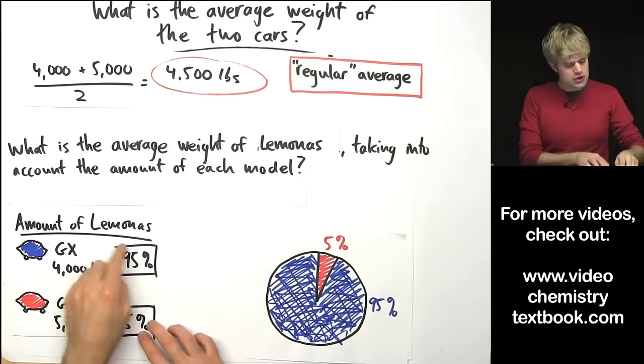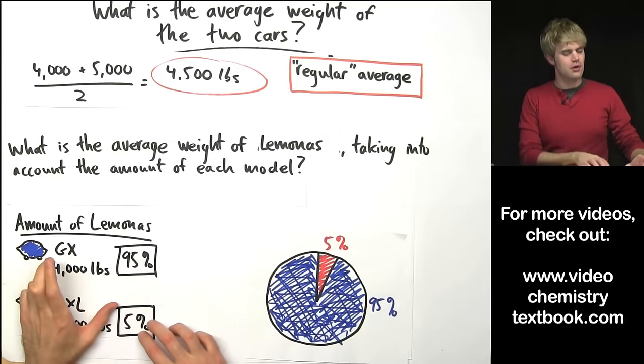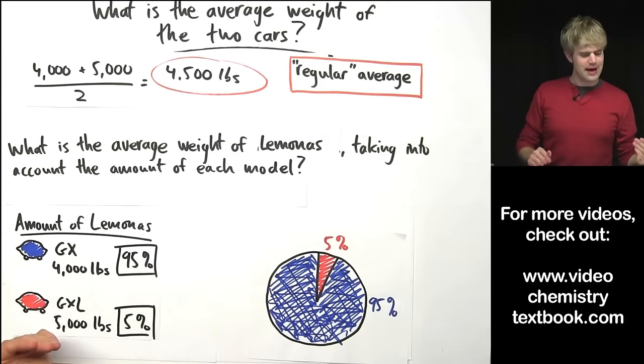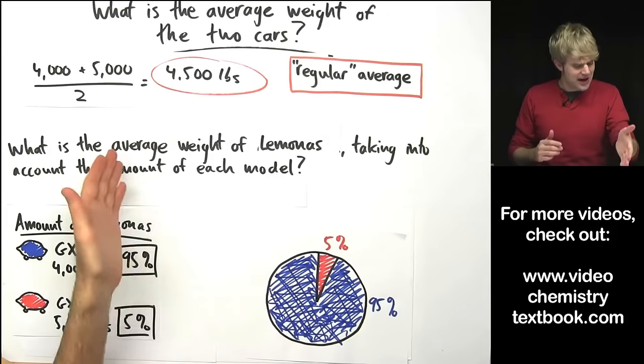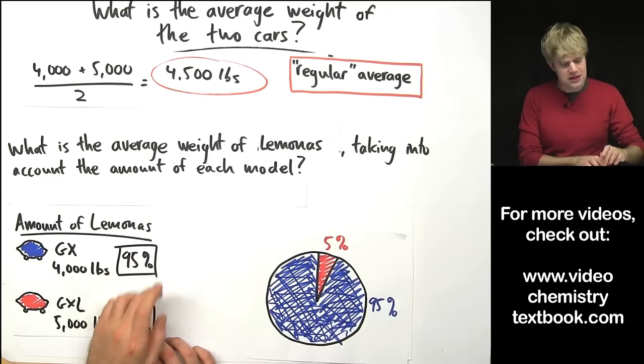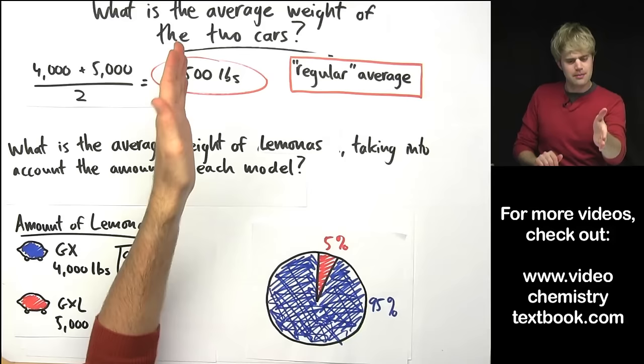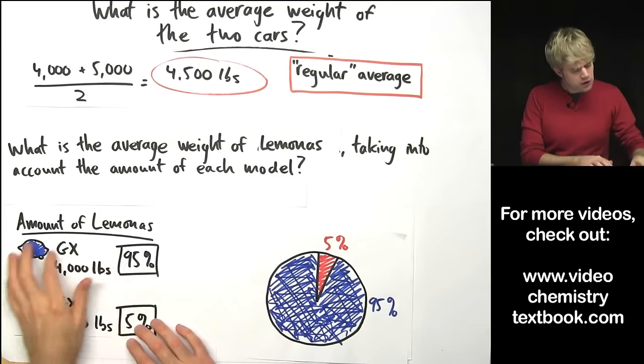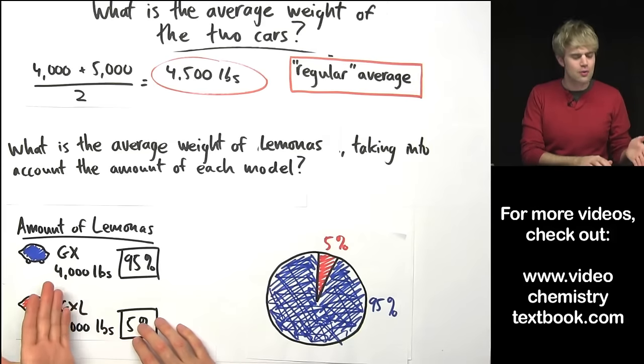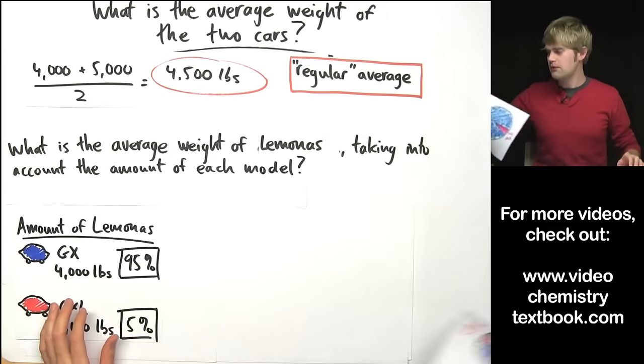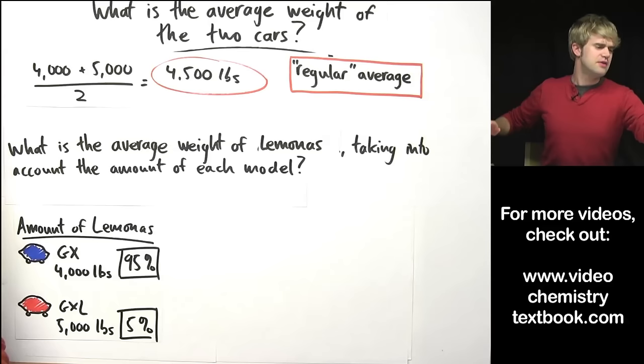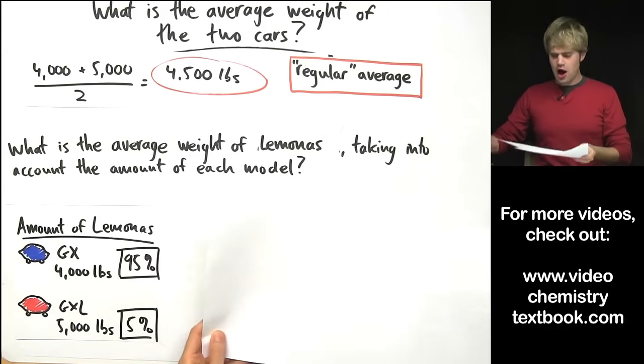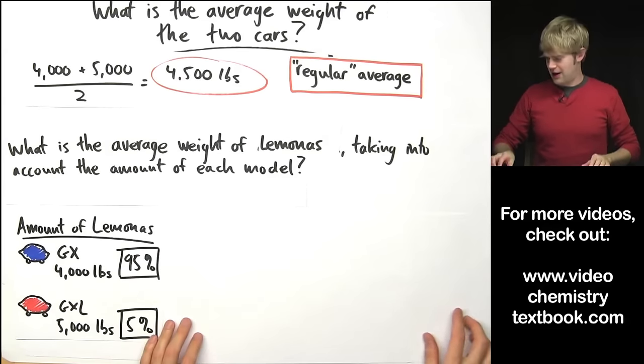Because there are so many more of the Lamonas GXs and they weigh less, we need to come up with an average that takes this into account and gives us a number that's not just right in the middle but would be closer to this because there's so many more of them. Here's how we do it. This is where we get to the idea of the weighted average.